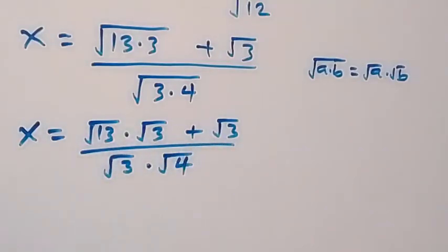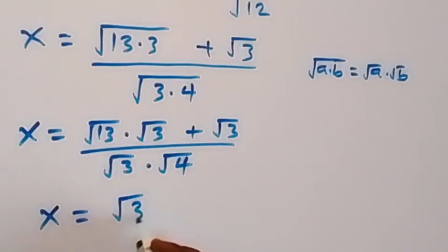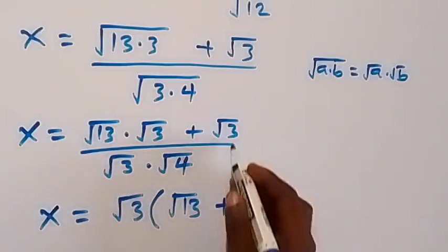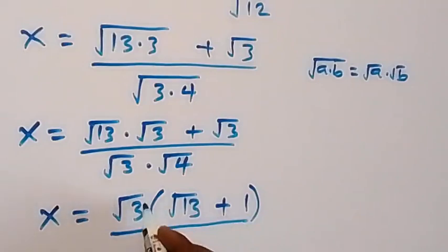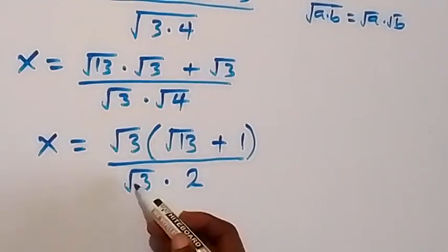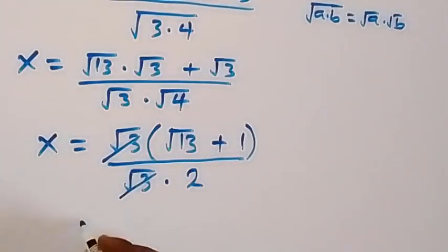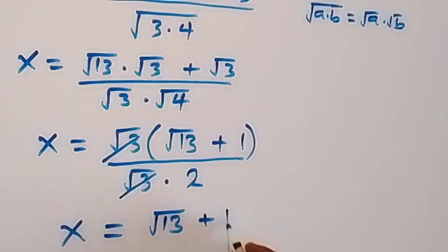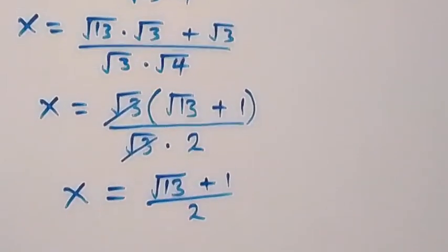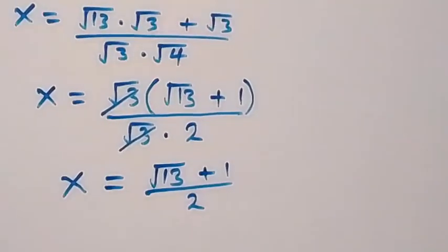Here we have √3 common, so we factor it out. x equals √3(√13 + 1) over √3 times √4. The √3 terms cancel each other, and √4 = 2, so x equals (√13 + 1) over 2.